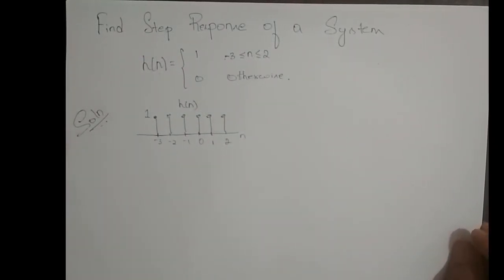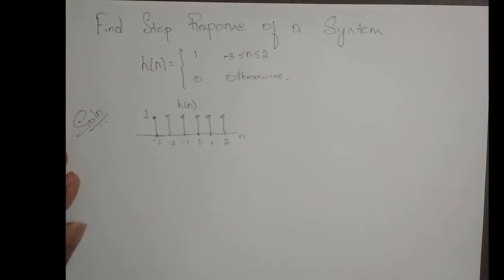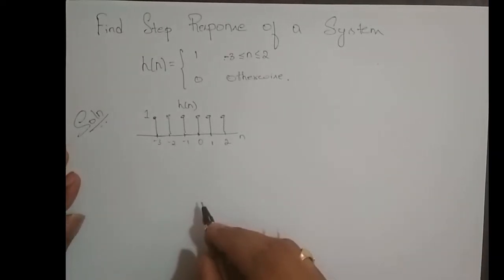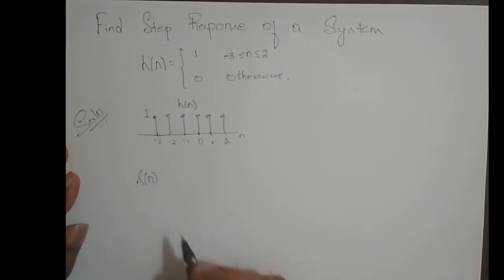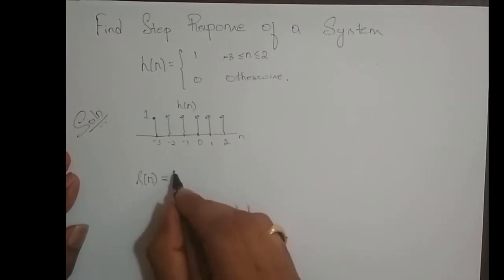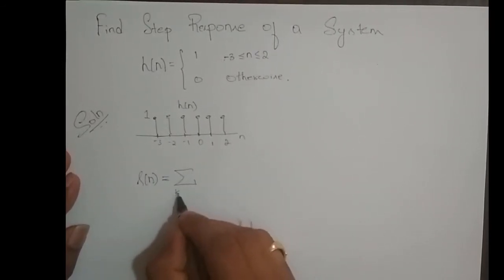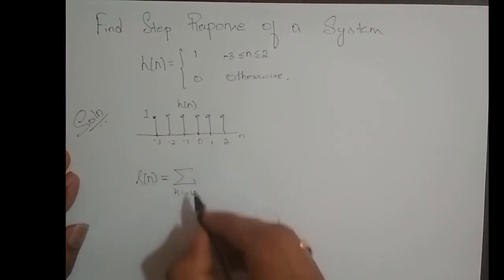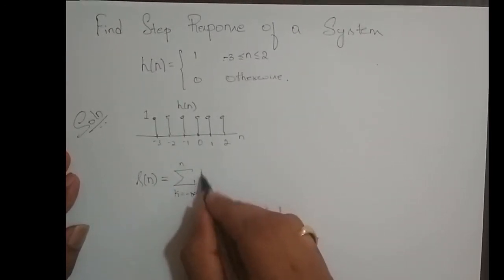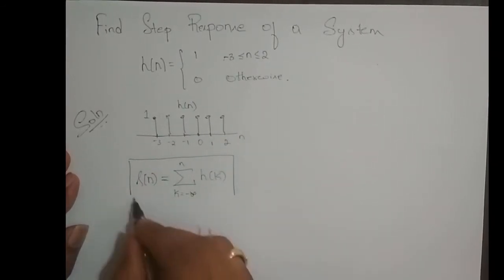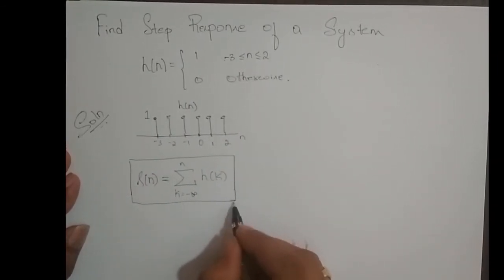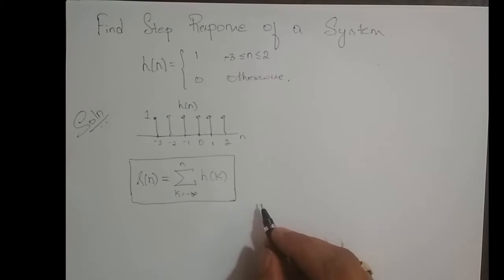Now I need to find its step response. In the previous video, we derived the equation to find the step response of a discrete-time system. S of n — the step response — is equal to summation k varying from minus infinity to n of H of k. This is the equation we derived, and we called it the running sum of the impulse response, which I will try to convince you with in this problem.